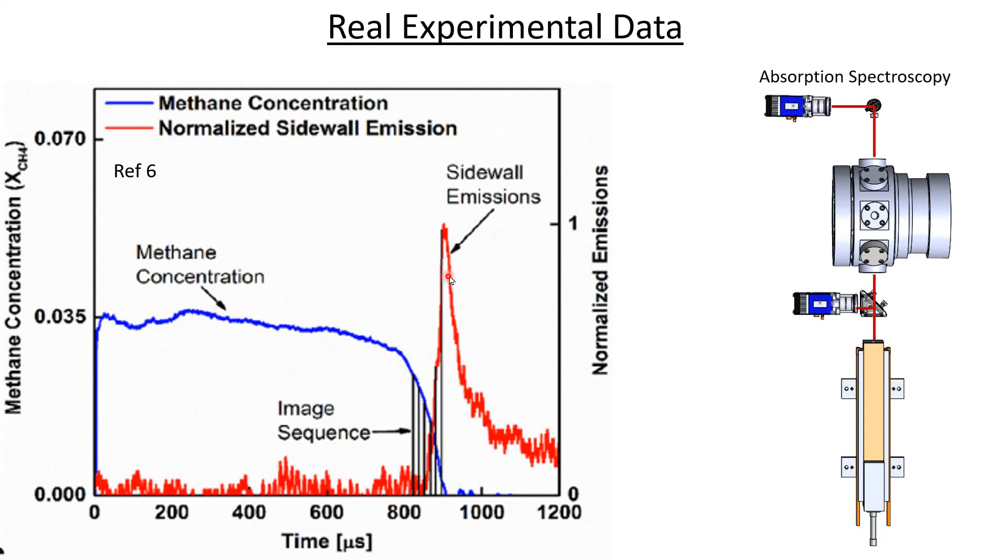Now, methane concentration is what we call an absorption spectroscopy setup. So in other words, you have to shoot a laser beam through the test section. And that laser beam is at a specific wavelength that we know methane absorbs at. And so a little bit less light comes out the other side. And by comparing the amount of light coming out this side to the amount of light that went in this side, we can determine methane concentration. So we call that an absorption spectroscopy setup.